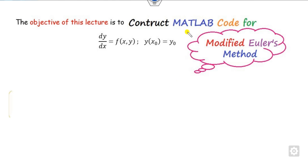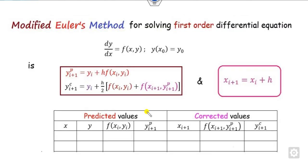The objective is to construct a generalized MATLAB code for any function f(x,y). You can change f(x,y) to be 2x minus y, x squared plus y, or anything else depending upon your choice. What is the modified Euler method? We discussed in the theory class that we update the solution scheme with the help of YP — called the predictor equation — and YC, which represents the corrected value. We discussed how to solve problems using this formula in the theory class.